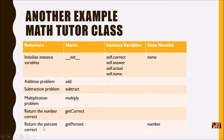We have our behaviors, the names of each method, the instance variables used, and sometimes data passed in. When we initialized our instance variables, the name came in to its parameter. We also used a number argument passed to a parameter.